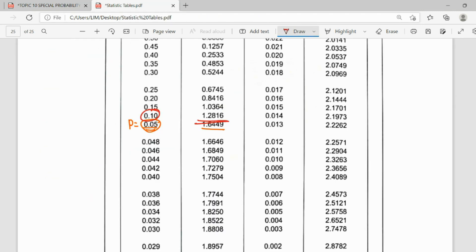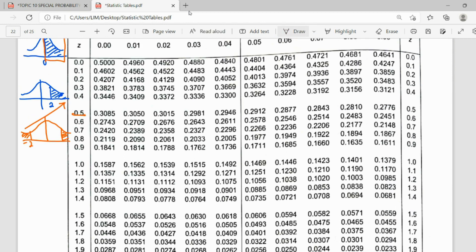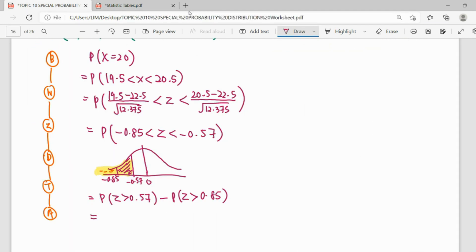So from our table, we get 0.2843 minus 0.1977.